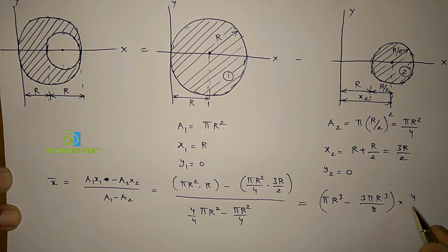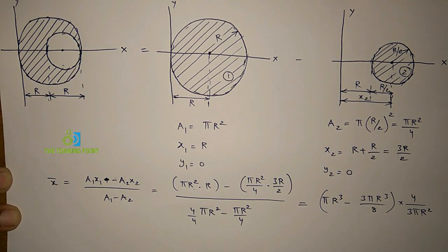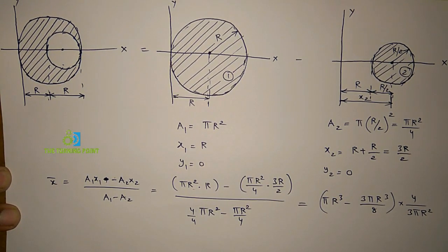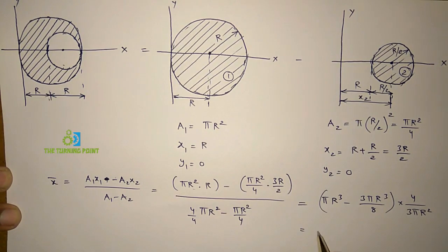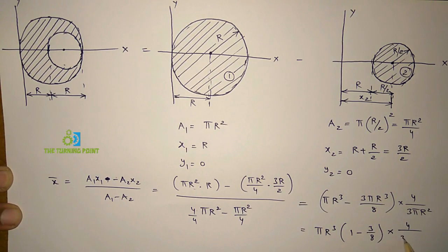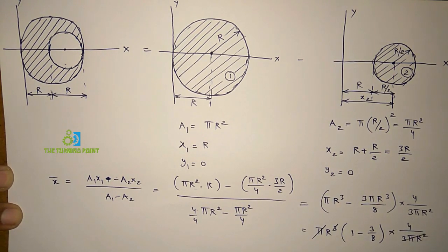So it will be reversed, 4 by 3 pi r square. Then we get pi r cube times 1 minus 3 by 8 over 3 pi r square divided by 4. So pi r square gets cancelled.